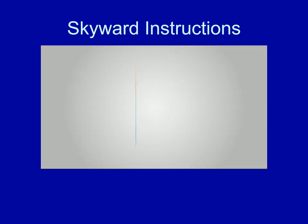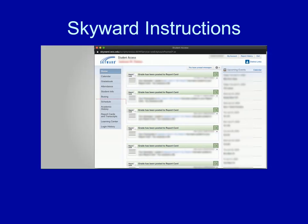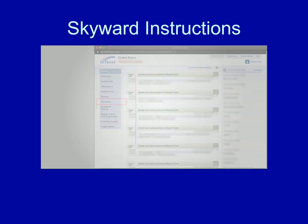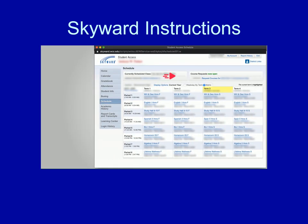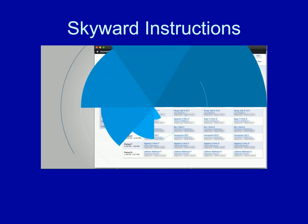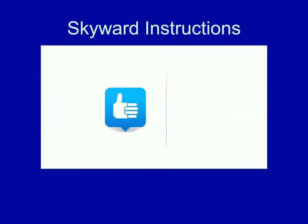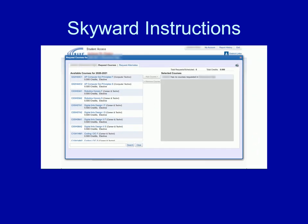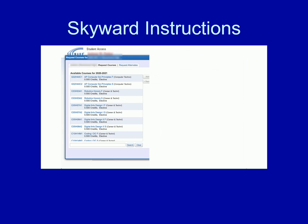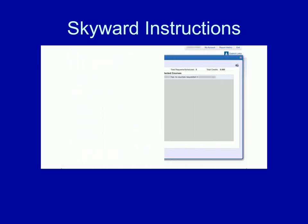Once you are logged in, choose Schedule from the left-hand menu. Next, locate Course Requests Now Open on the right-hand side and choose the link for Request Courses. You will now be on the Course Requests page. On the left side you will see Available Courses, and on the right side you will see Selected Courses.